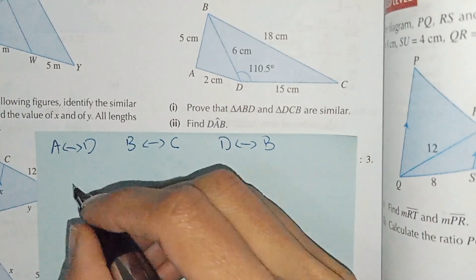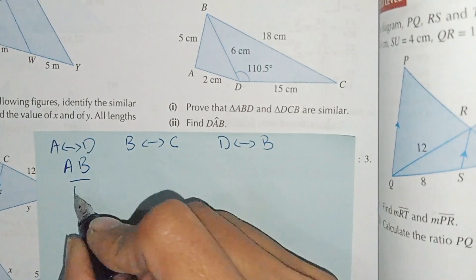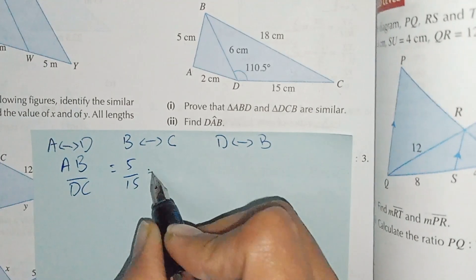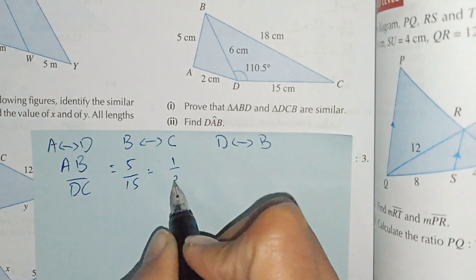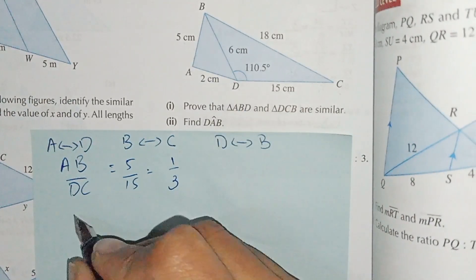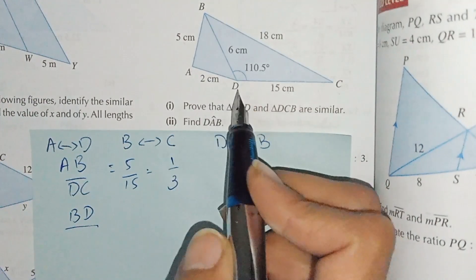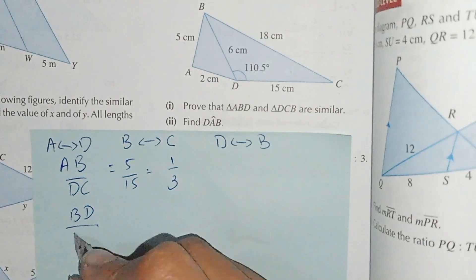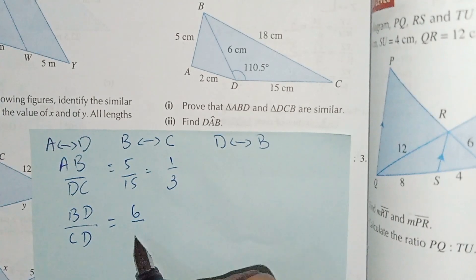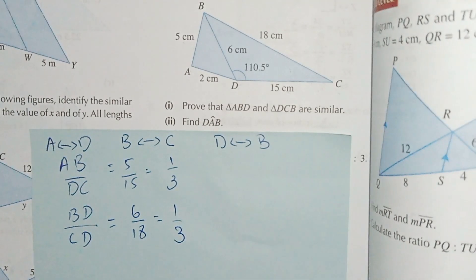We can write it like this: AB over DC. AB is 5 cm and DC is 15 cm. By simplifying we get 1 by 3. The second ratio is BD over CB. BD is 6 and BC is 18. By simplifying we get 1 by 3.